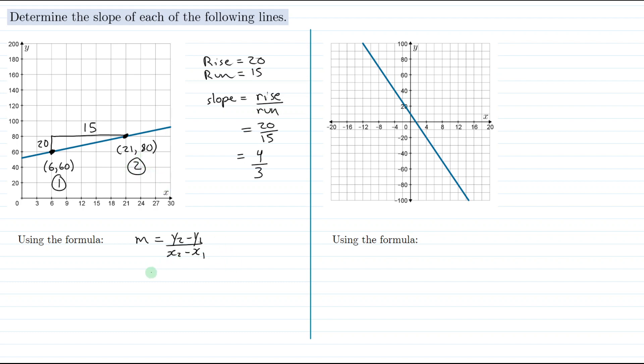For y2 minus y1 we need to subtract the y value for point two minus the y value for point one, so that's 80 minus 60. And for the denominator x2 minus x1, we need to take the x value for point two and subtract the x value for point one, so we have 21 minus 6. 80 minus 60 is 20, 21 minus 6 is 15. And we've already seen that this fraction reduces to 4 thirds, which is our slope.